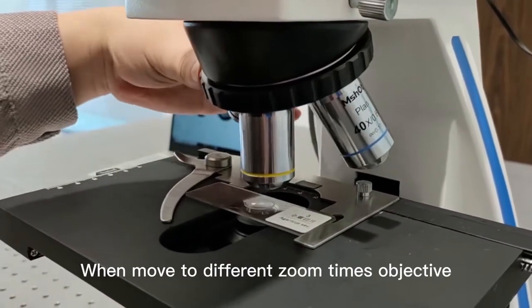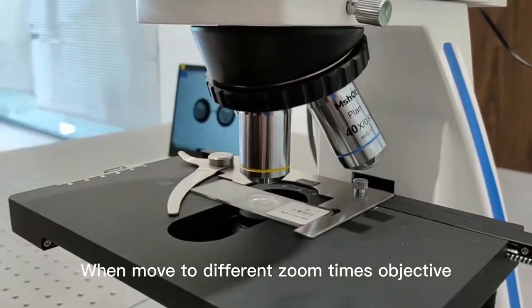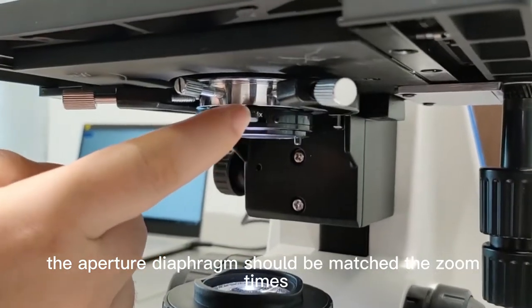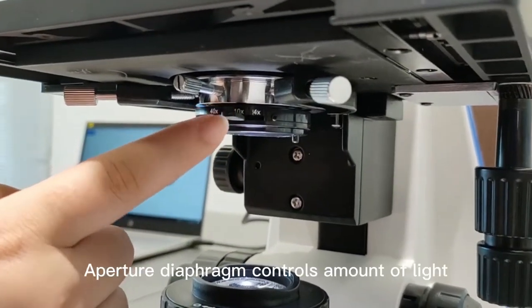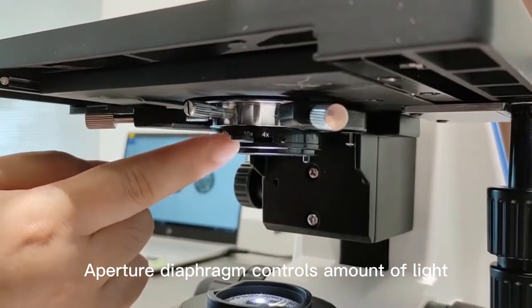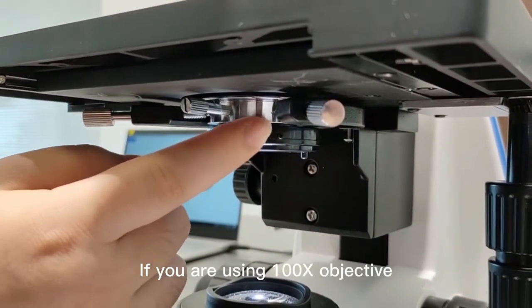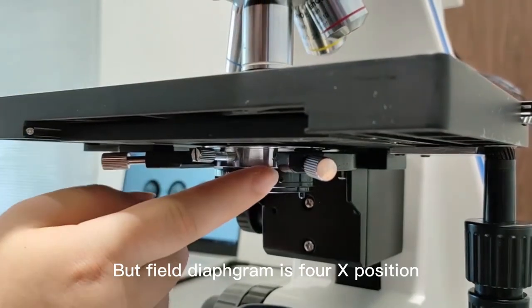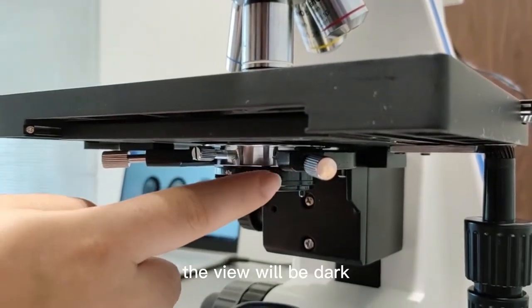When moved to a different magnification objective, the aperture diaphragm should be matched to the magnification. The aperture diaphragm controls the amount of light. If you are using an 8x objective but the field diaphragm is at the 6th position, the view will be dark.